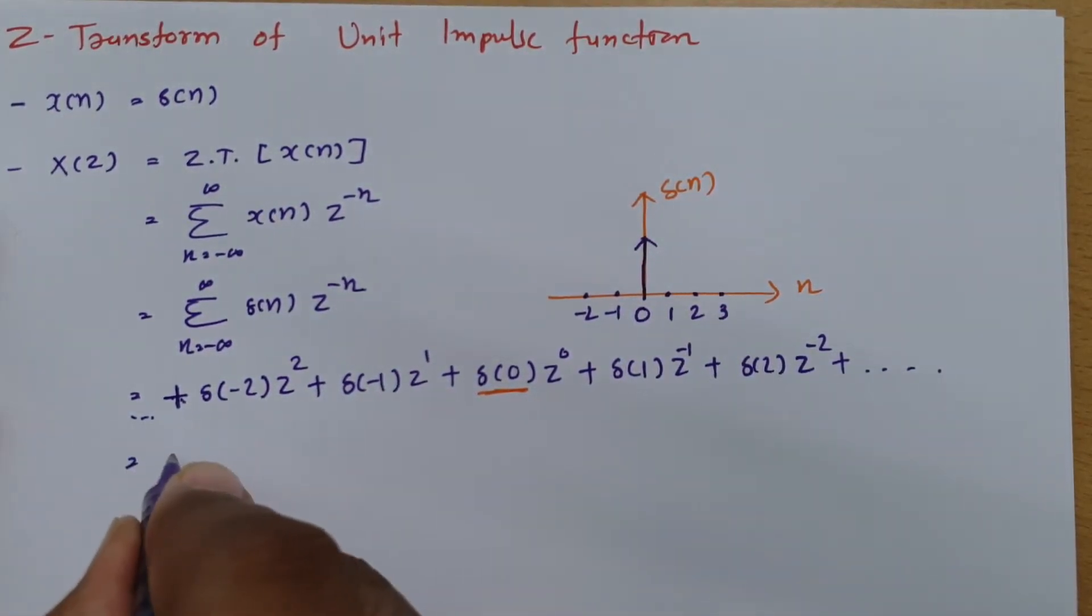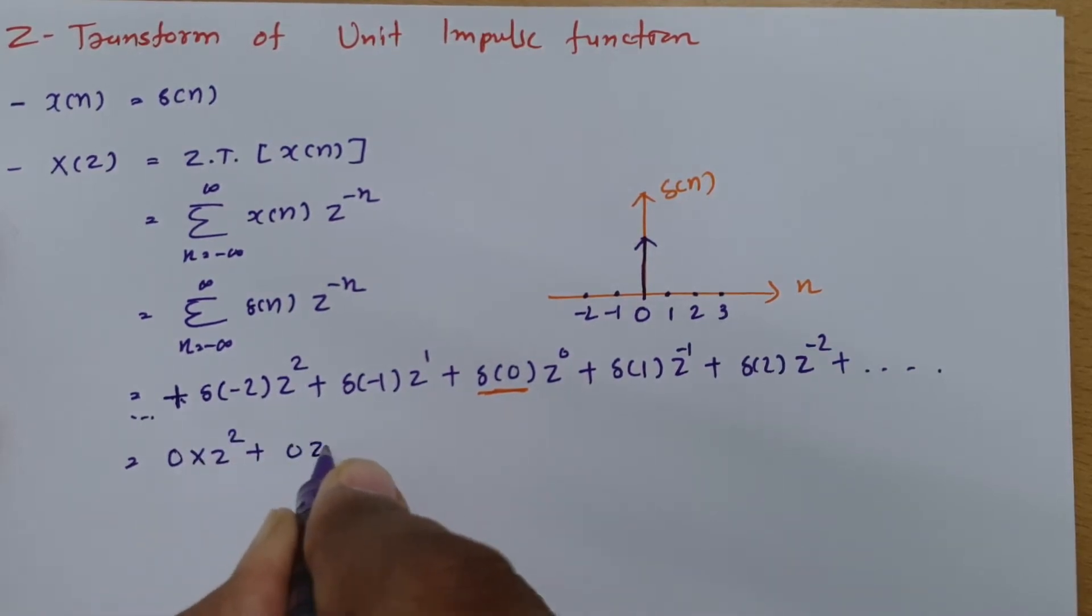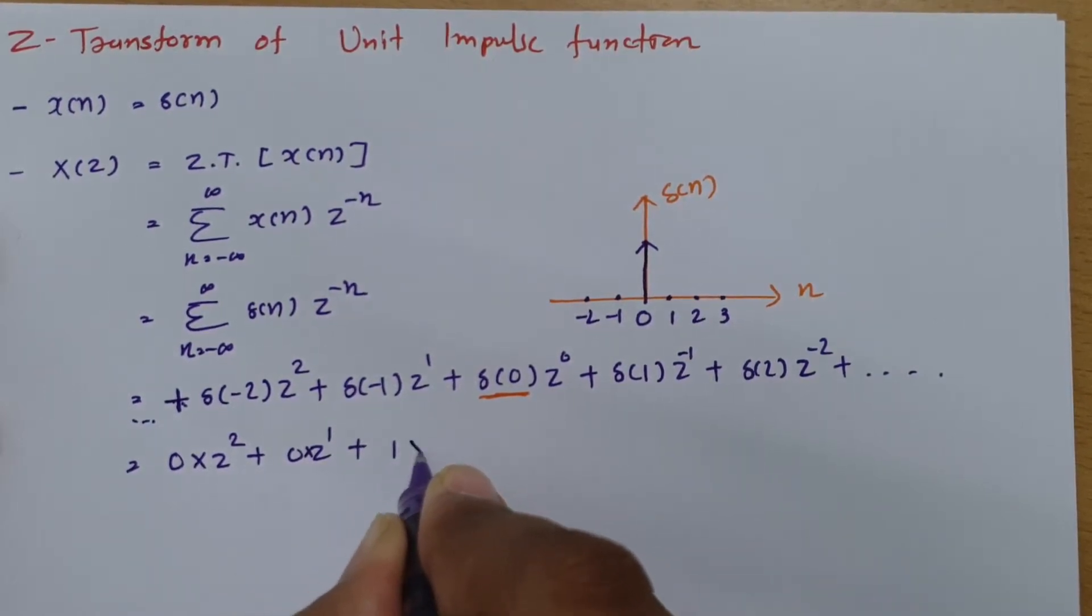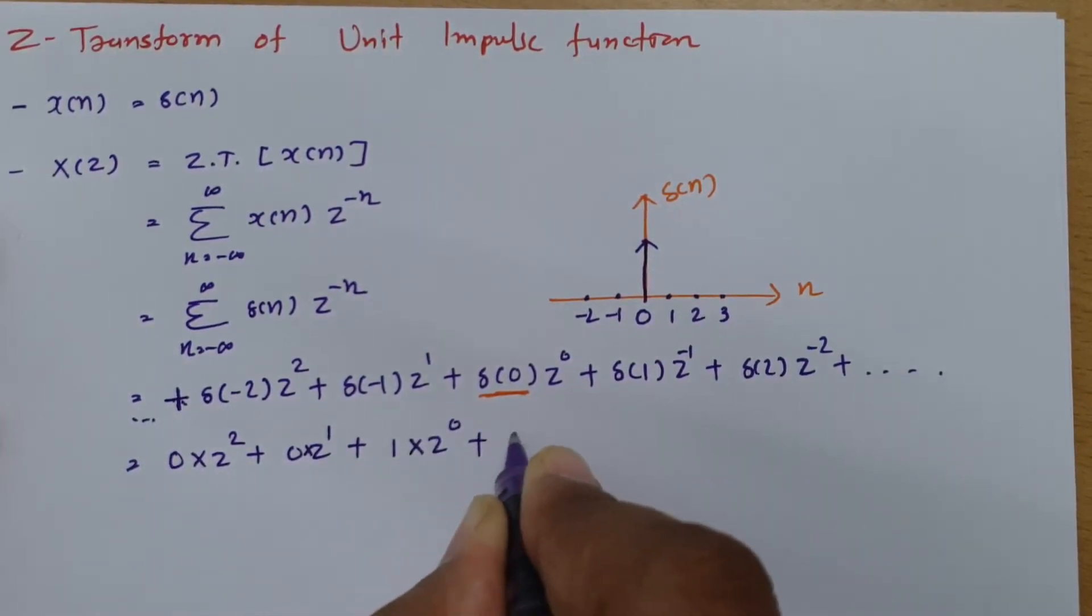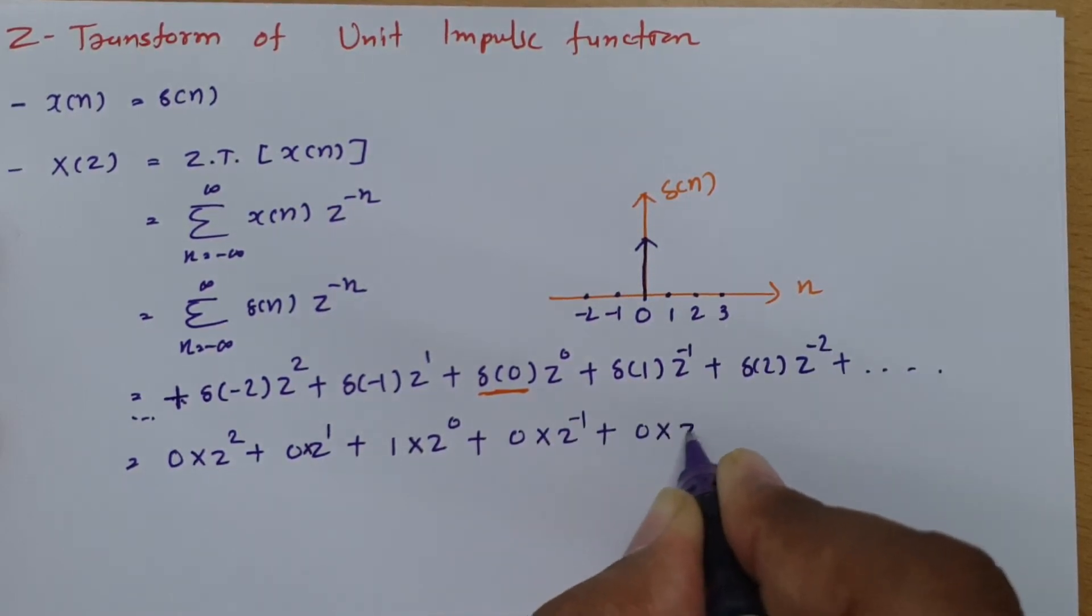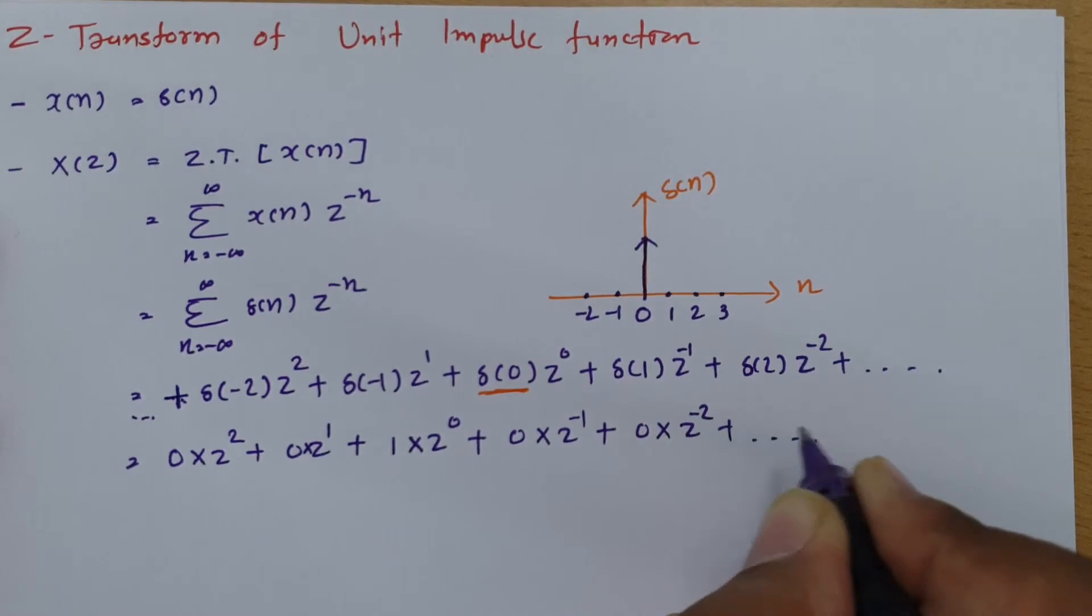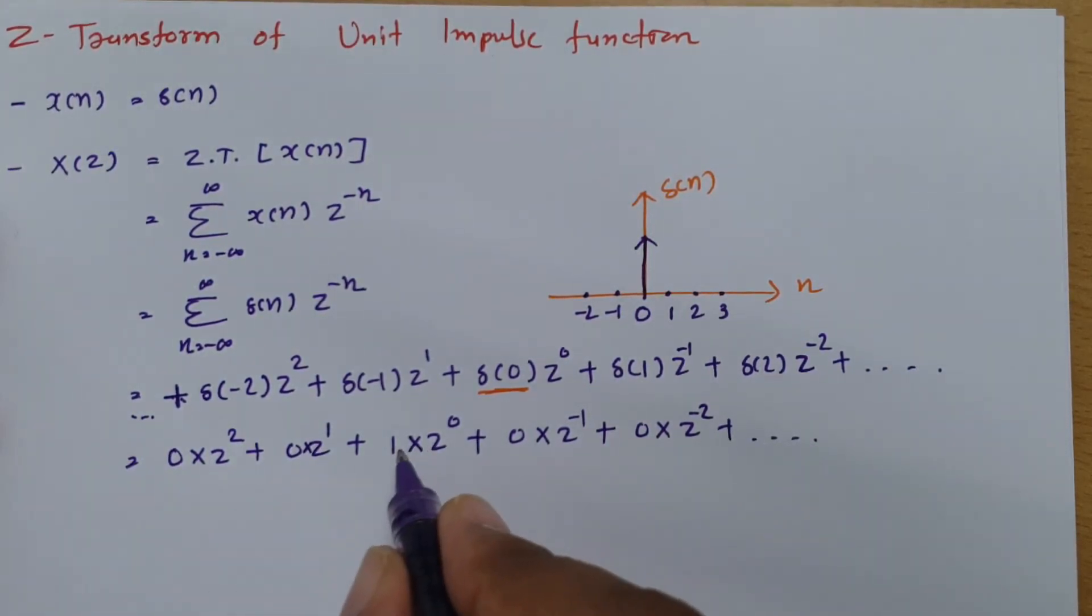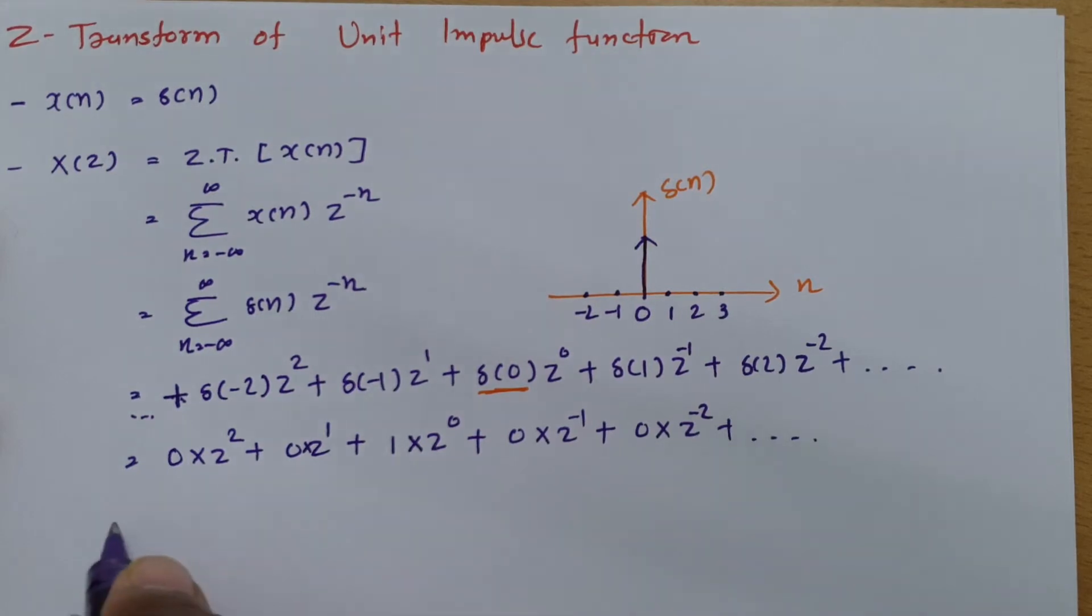So you will observe it is 0 times Z squared, 0 times Z to the power 1, plus 1 times Z to the power 0, plus 0 times Z to the power minus 1, and so on. All these terms get eliminated, and you're left with 1 times Z to the power 0, which is 1.